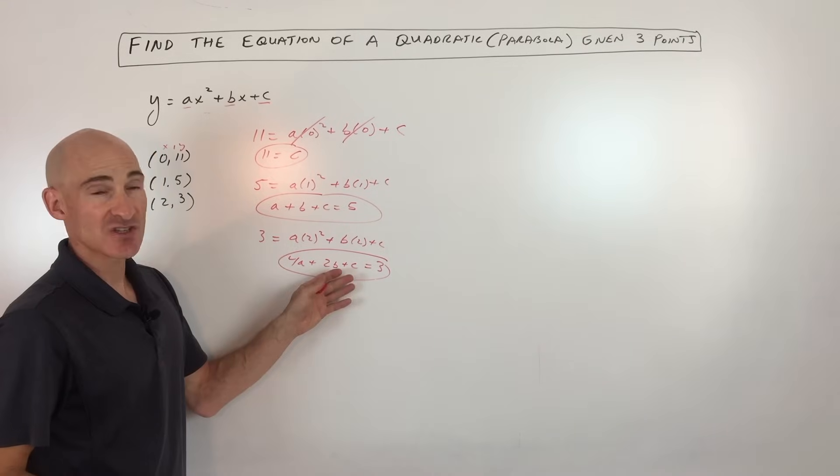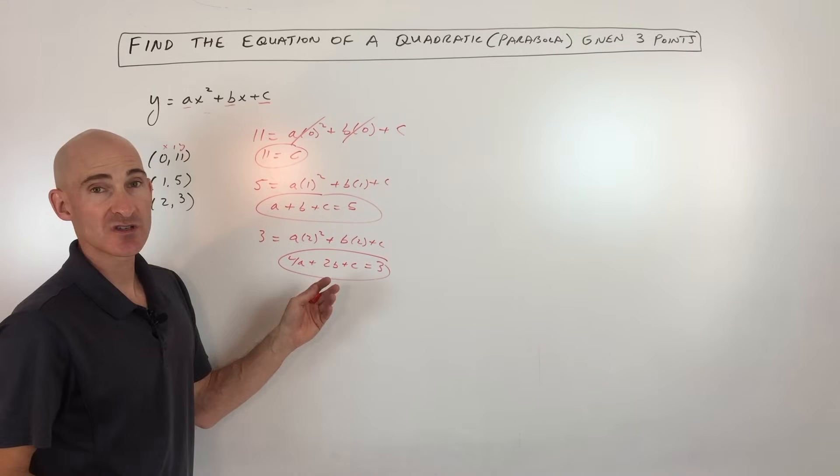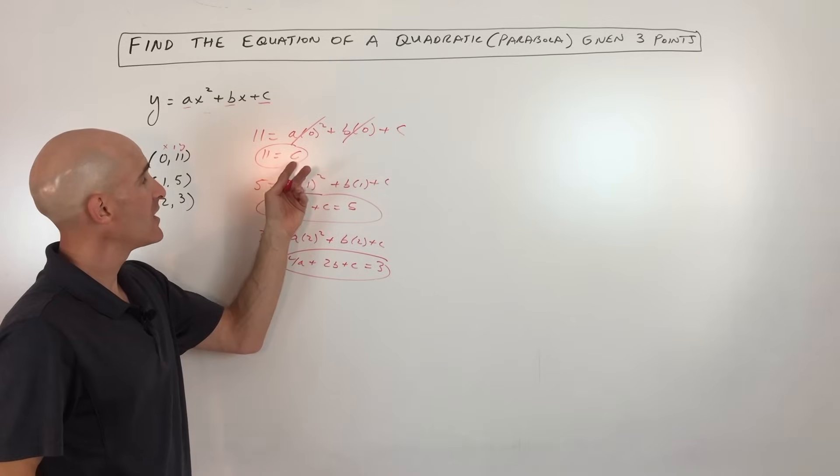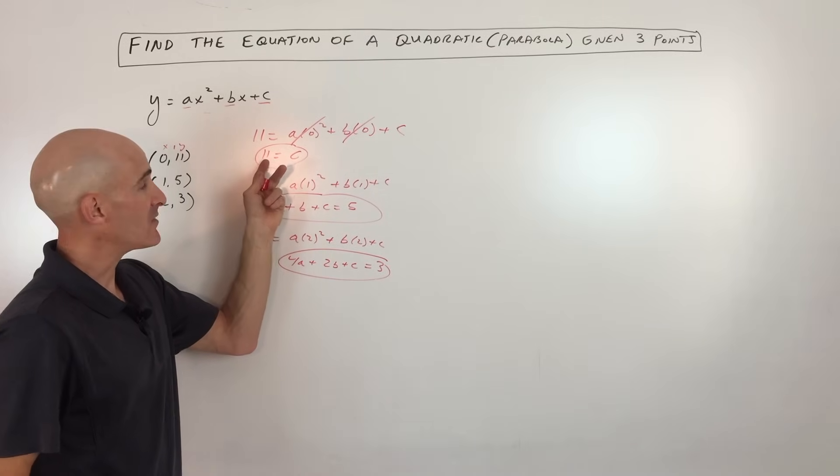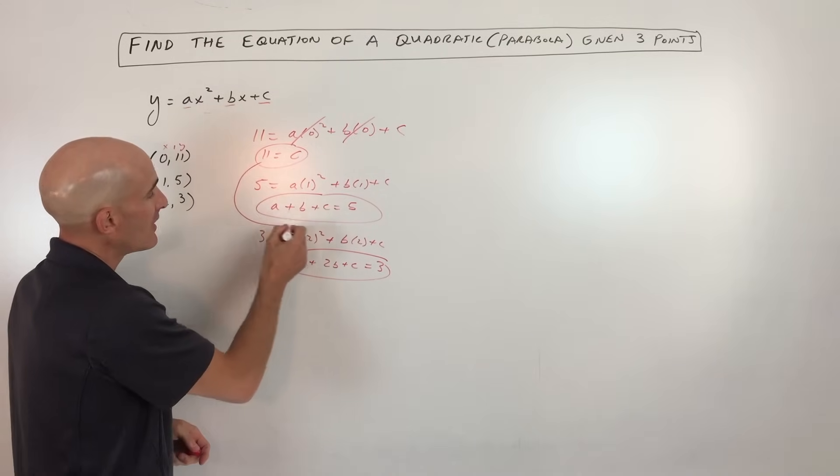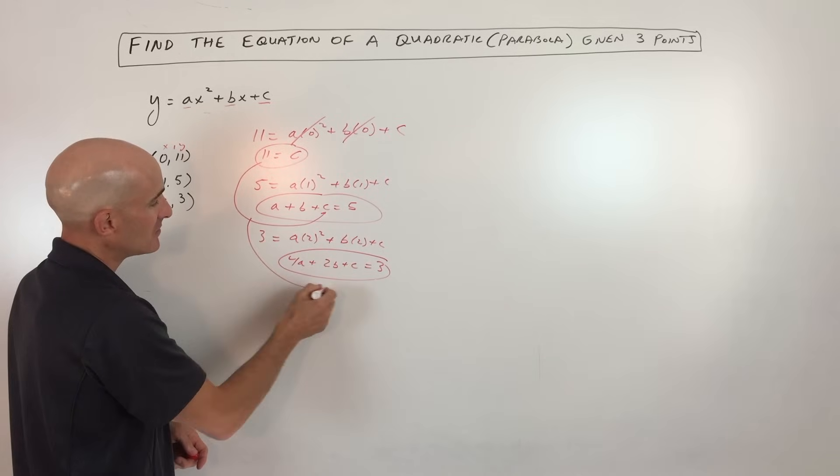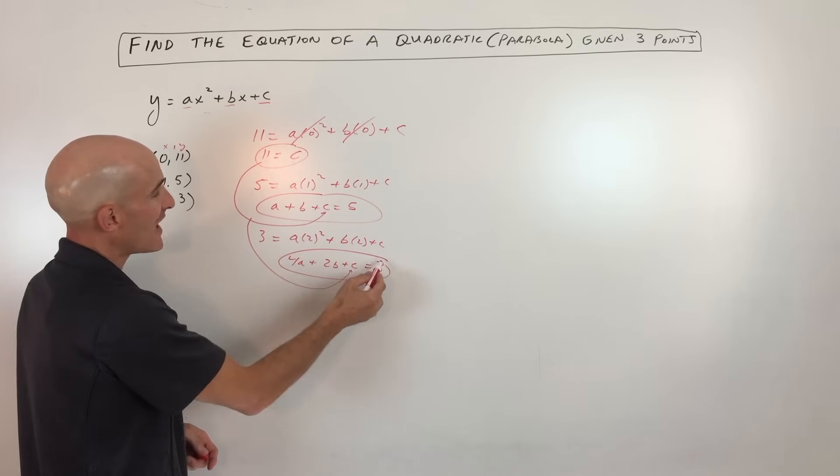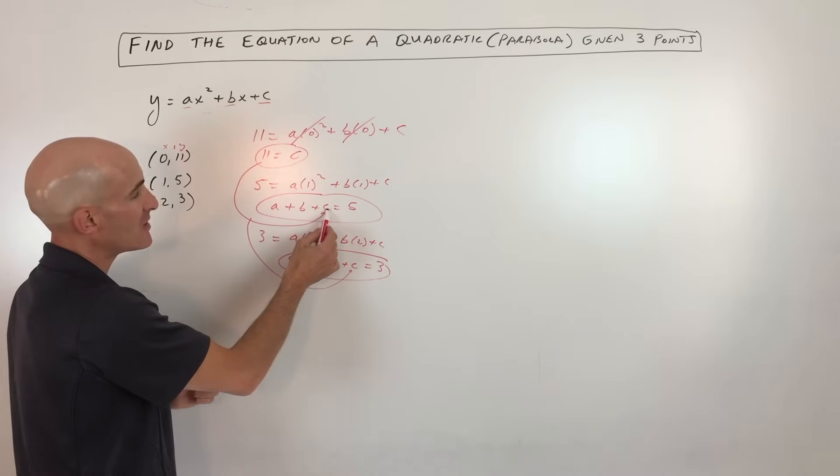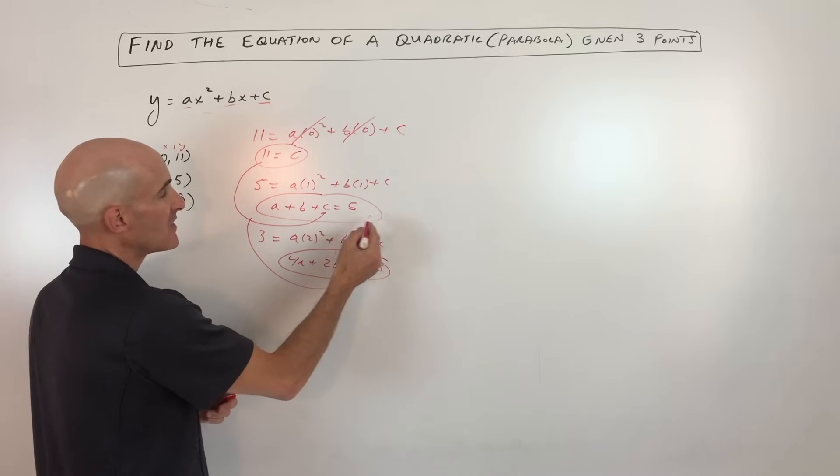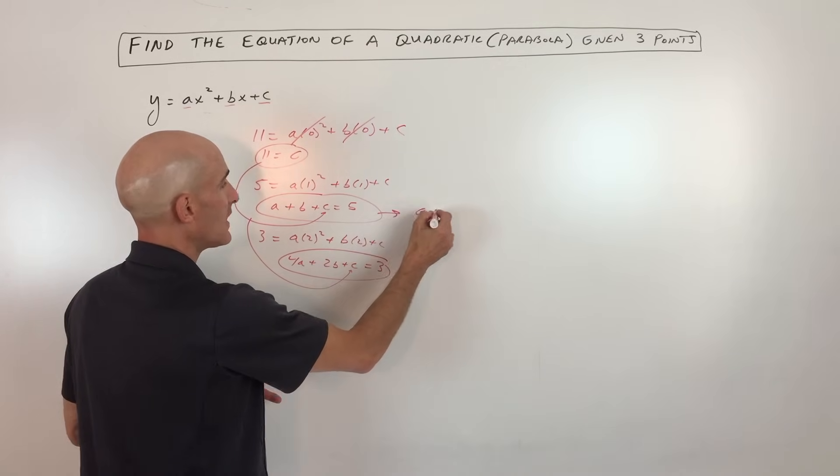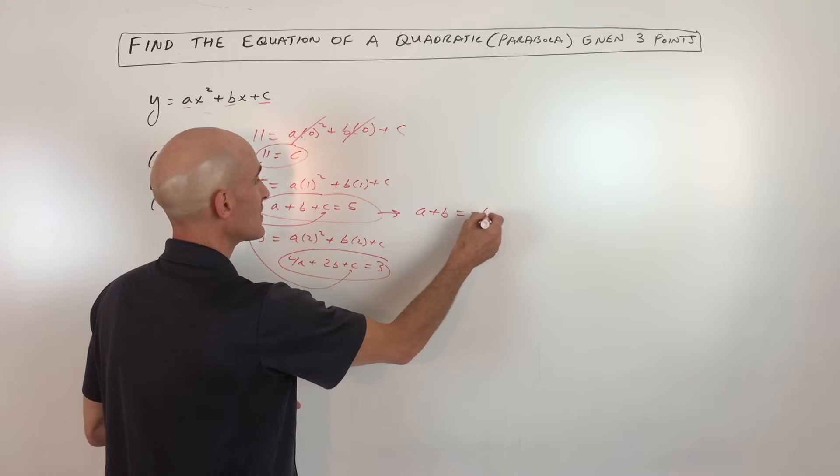So we have three equations, and we're trying to solve for three variables. Now this one worked out kind of nice because we already know what c is. It's 11. So what I'm going to do is I'm just going to put the 11 back in here for c. And then what I'm going to do is I'm going to subtract it from both sides. So if I put 11 here and I subtract 11, that's going to be negative 6. So we get a plus b equals negative 6.